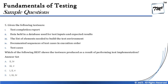The next question is question number five. It says: given the following test work products — a test completion report, data held in a database used for test inputs and expected results, the list of elements needed to build the test environment, documented sequences of test cases in execution order, and test cases — which of the following best shows the test work products produced as a result of performing test implementation?